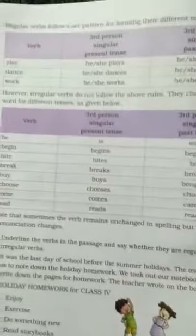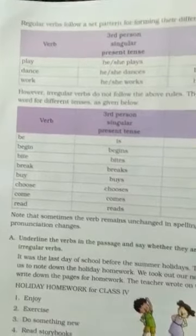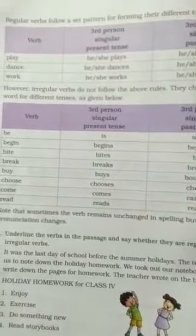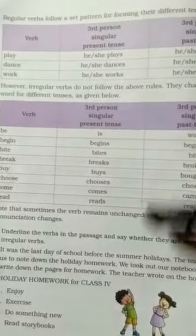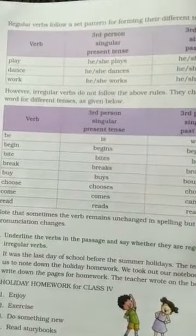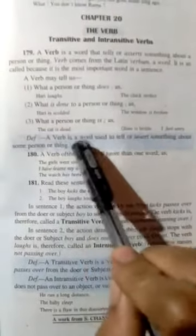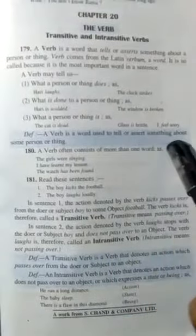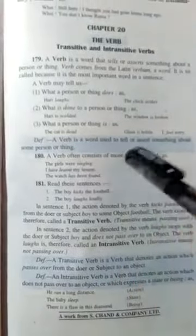Now we will look at the main verbs and the helping verbs. In this lesson, what they have given means using verbs in different tenses. Tenses means you already know about present, past, future. So first, what is the definition of verb? A verb is a word used to tell or assert something about some person or thing. What is the meaning of verb? It is telling or showing something about a person or thing.